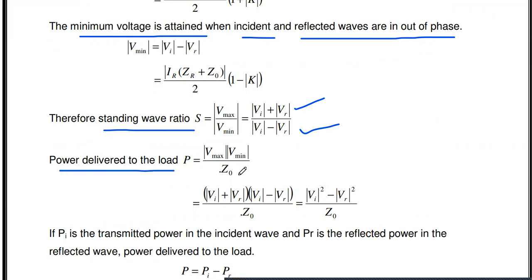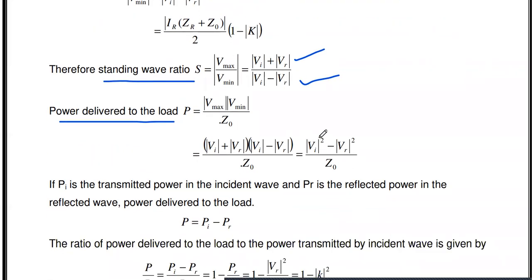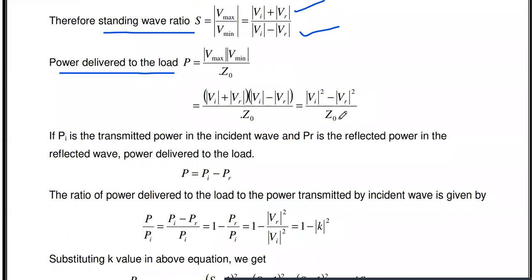The power delivered P can be written using the previously derived power formula: P = |V max| × |V min| / Z_0 (or R_0 for a dissipationless line). Substituting V max and V min, using the identity (A+B)(A−B) = A²−B², we get P = (V_I² − V_R²) / Z_0, which separates into V_I²/Z_0 minus V_R²/Z_0.